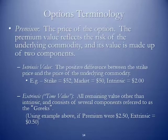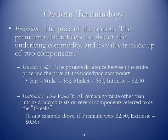The premium is the price of the option. The premium value reflects the risk of the underlying commodity and its value is made up of two components. Just as in the lesson notes where I talked about car insurance and a premium, the premium is what it will cost you to have this type of risk insurance. There are two pieces: the intrinsic and the extrinsic. The intrinsic is the embedded value — the positive difference between the strike price and the price of the underlying commodity. For example, if in your contract you set a strike price of $52 and the current market is $50, the intrinsic value is $2, so we know that the premium would be at least $2.